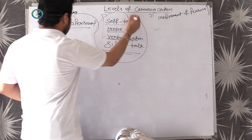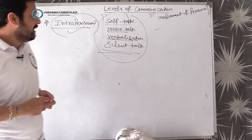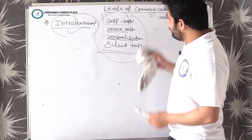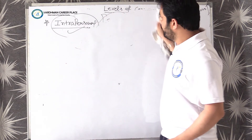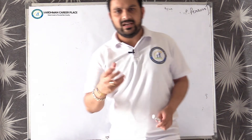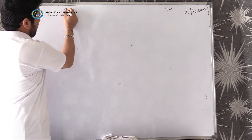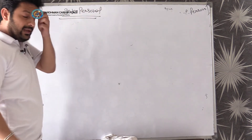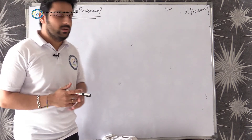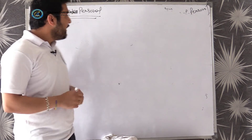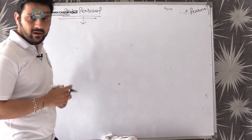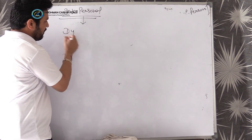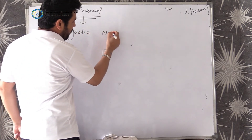Now for interpersonal communication, there is a lot of involvement of people. The next level is interpersonal communication. Interpersonal communication has two types: one is dyadic, and one is non-dyadic. Remember that — dyadic and non-dyadic.